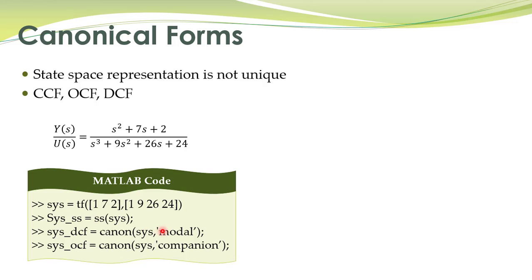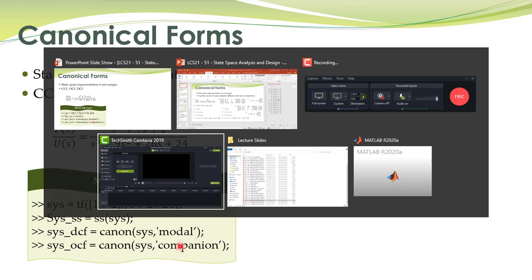You can also obtain canonical form representations. For example, the diagonal canonical form can be obtained by the MATLAB command canon, which requires the system as an argument and the model type 'modal' to get the diagonal canonical form representation. To obtain the observable canonical form, you use a different command.